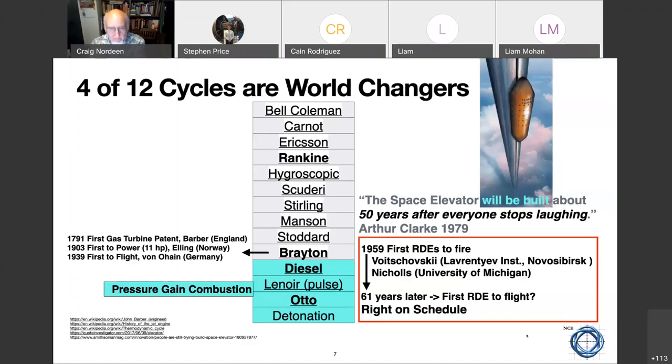The development time can be a little discouraging. The Brayton cycle, first patent, gas turbine, turbo patent, was 1791. The first self-sustaining cycle was 1903, about the same time as the Wright brothers by Elling in Norway. And the first to flight was Von Ohain in 1939. So there's 36 years from getting it to run at all to the first flight. The first RDE to fire was in 1959 in Russia and at the University of Michigan. So here we are 61 years later, and the first RDE has not flown, but I think we're right on schedule.